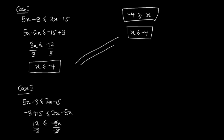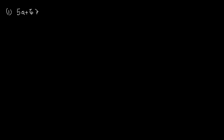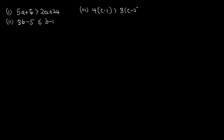Now let's solve the following inequalities. We have: (i) 5a plus 6 is greater than 2a plus 24; (ii) 3b minus 5 is less than or equal to b minus 1; (iii) 4 into bracket c minus 1 is greater than 3 into bracket c minus 2; and (iv) d minus 3 into bracket d plus 2 is greater than or equal to 2 into bracket 1 plus 2d.